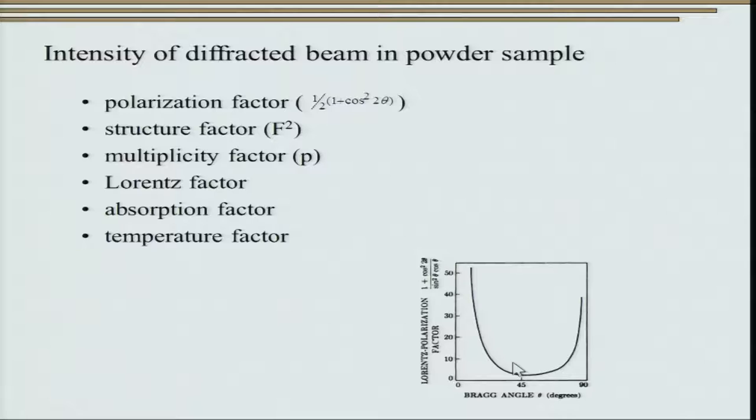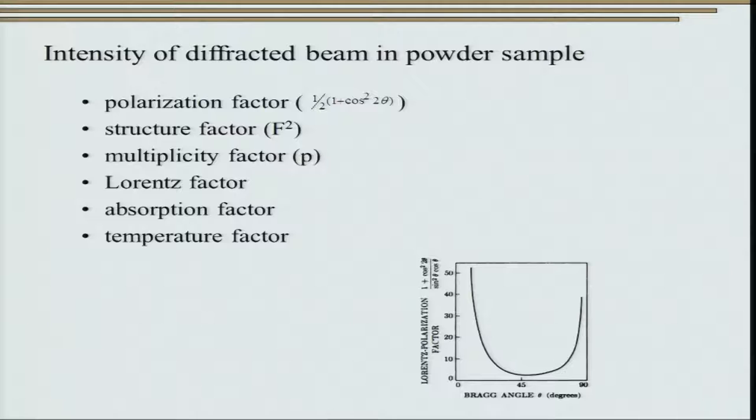The Lorentz contribution combined with the original polarization factor is generally combined together and when plotted shows a characteristic variation. So whenever we compare different diffractograms or different peaks in the same diffractogram, we have to account for the Lorentz factor. Another parameter that is generally ignored is the absorption factor: whenever X-rays are incident on a material, part gets absorbed, causing an additional path length to be considered. However, in most materials X-ray absorption is not significant and can be neglected.